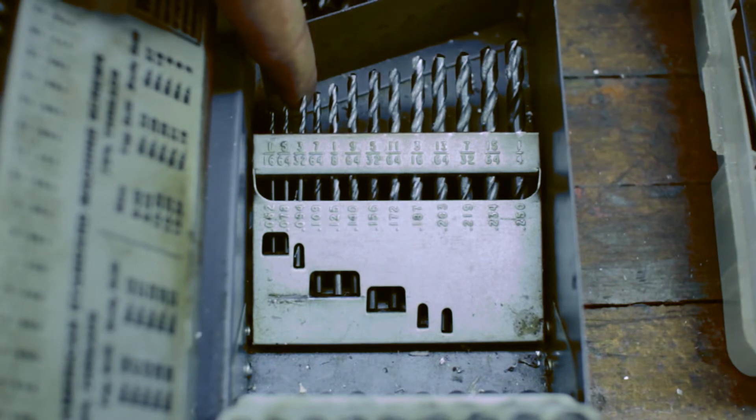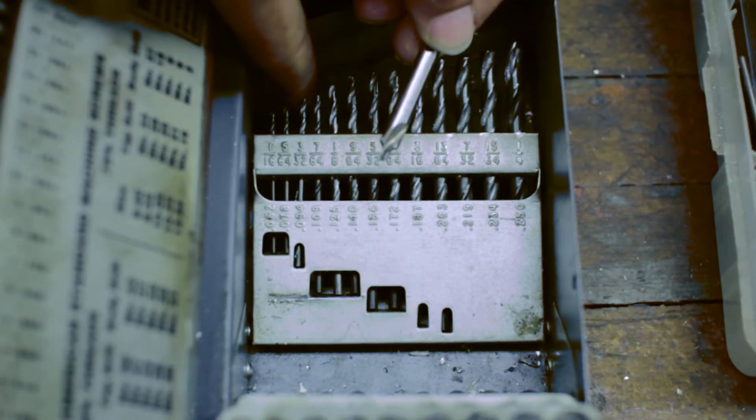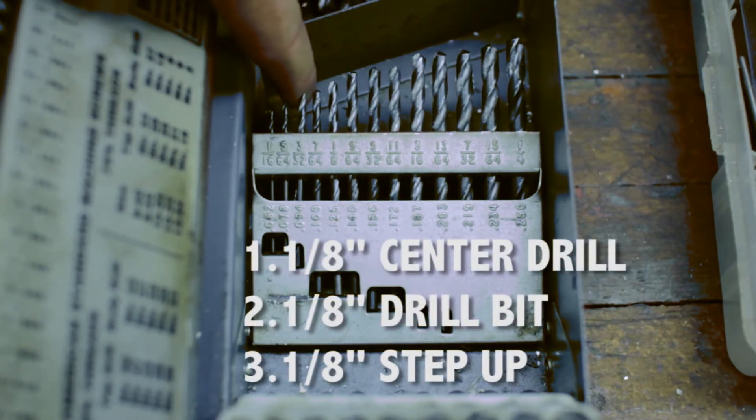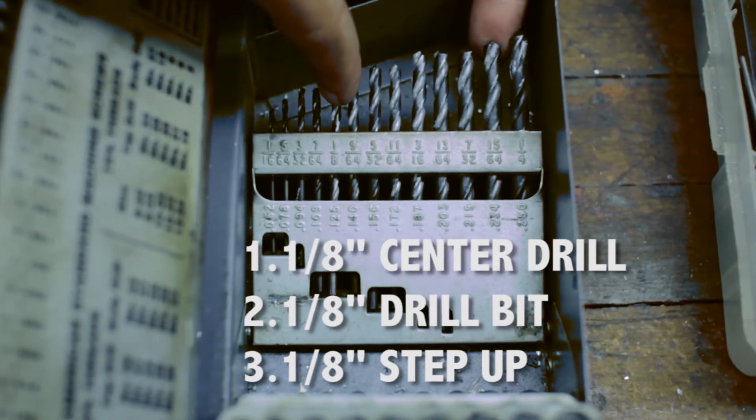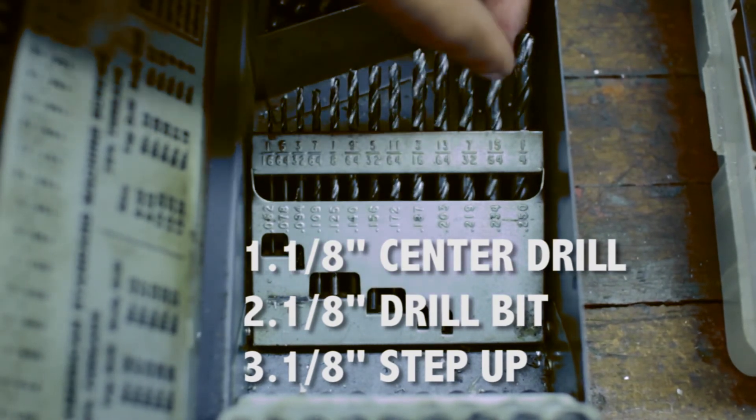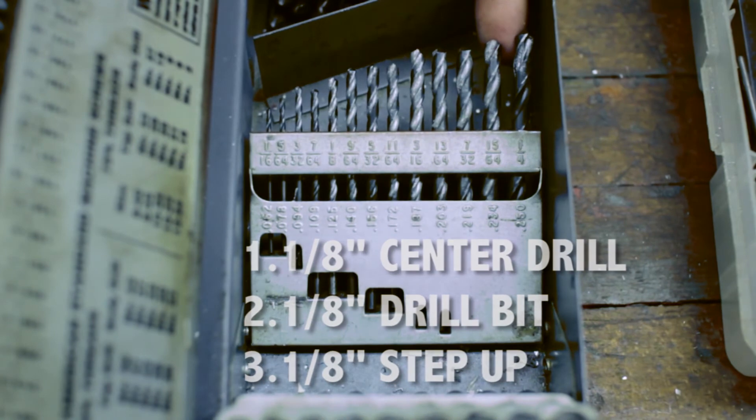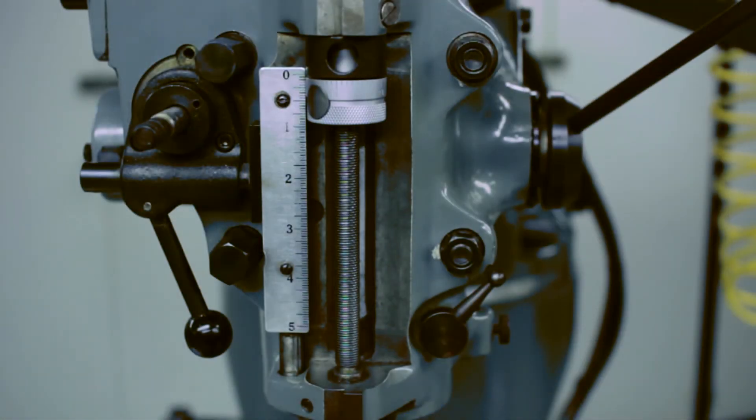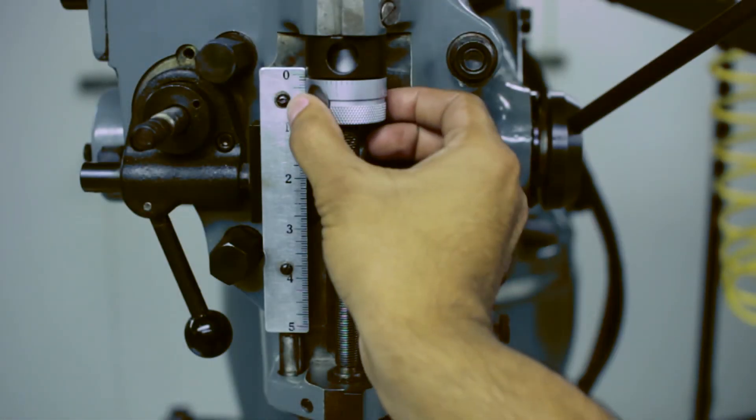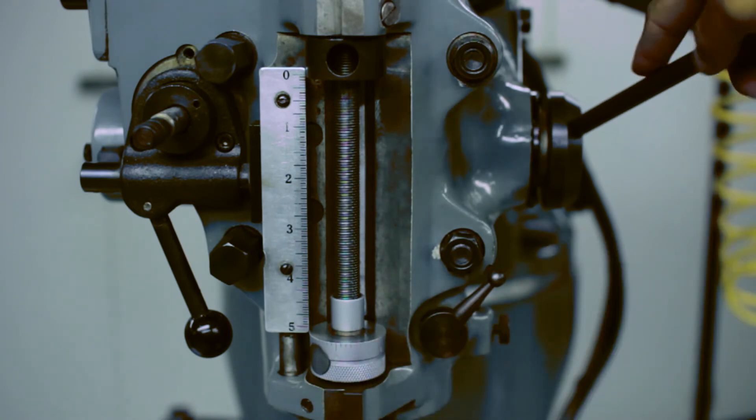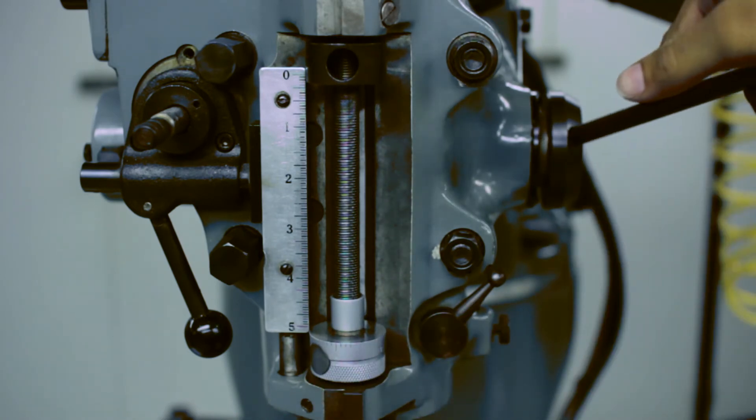For drilling operations, we always want to start our holes with a center drill and then an eighth inch. After that you do eighth inch step ups until you get to your desired diameter. When performing drilling operations, lower your spindle lock to operate your mill similar to a drill press.